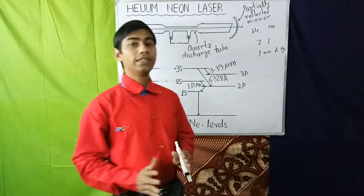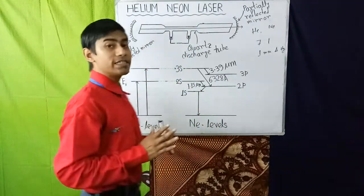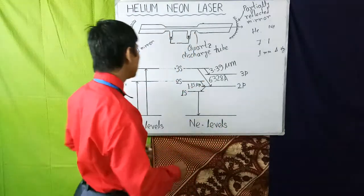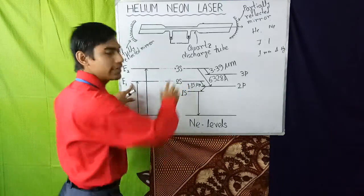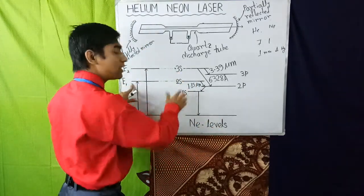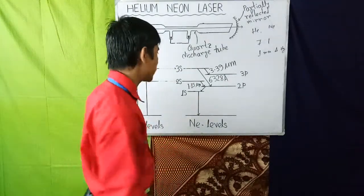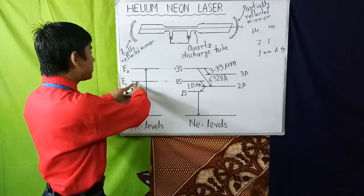Now we see here that there is close coincidence in energy between E1 and E2 levels with 2S and 3S levels. That is, energy of E1 and 2S level is same and energy of E2 and 3S level is same. So when helium atom in the metastable state E1 collides with neon atom in the ground state, neon atoms are easily excited and go to the 2S level.